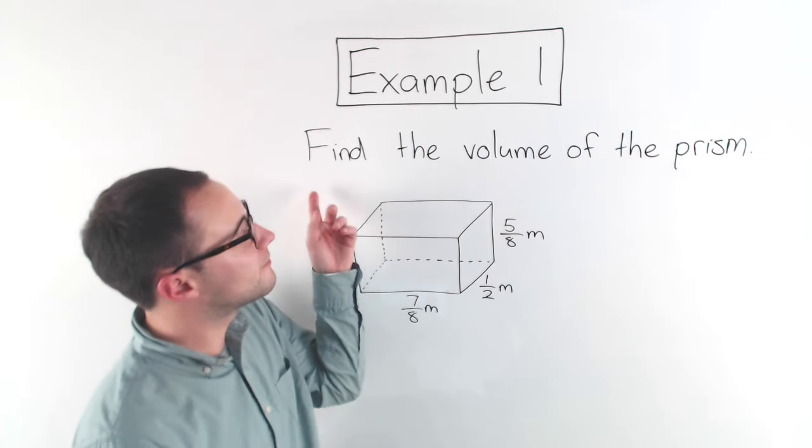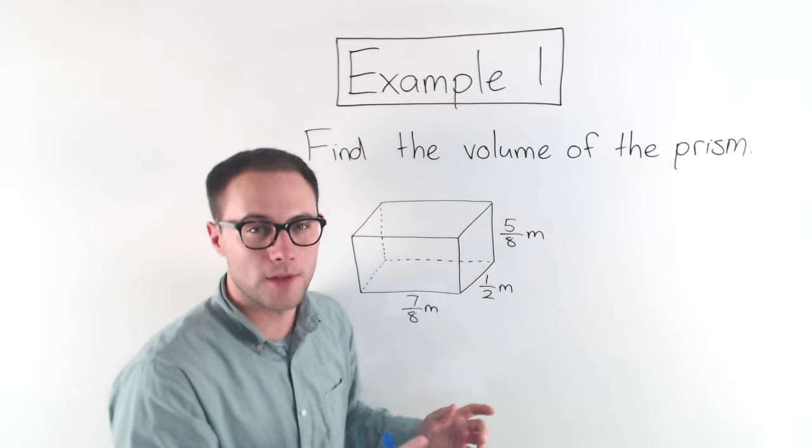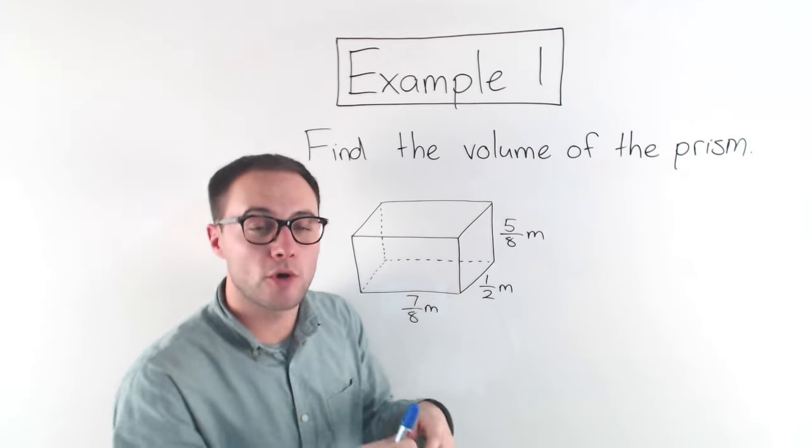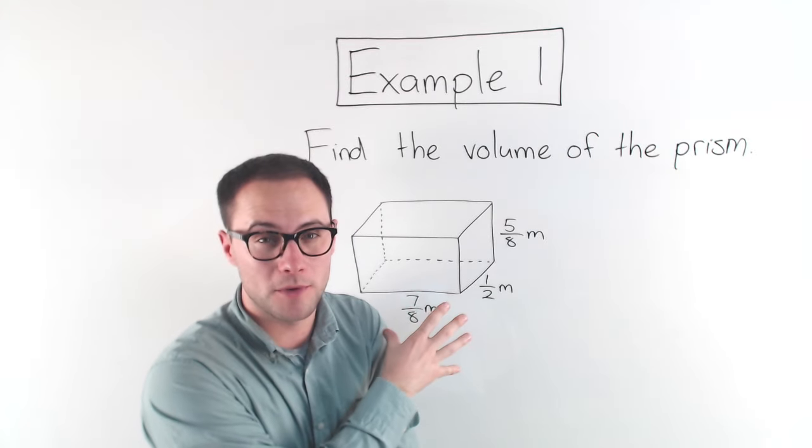Okay, example one. Find the volume of the prism. Now first, this is a rectangular prism. And with a rectangular prism or a square prism, there's two formulas that we can use to find the volume of this.